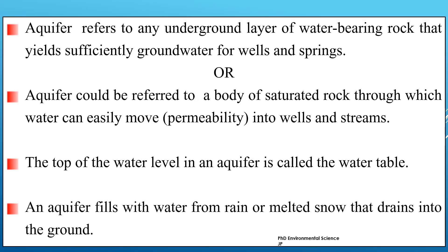An aquifer is a body of rock that is fully saturated with water. The spaces within the rocks are filled with water, allowing it to be extracted. The rock in an aquifer has high permeability, meaning water can move easily through the interconnected spaces within the rock. This is crucial for the aquifer to supply water to wells and streams. The top of the water level in an aquifer is called the water table.